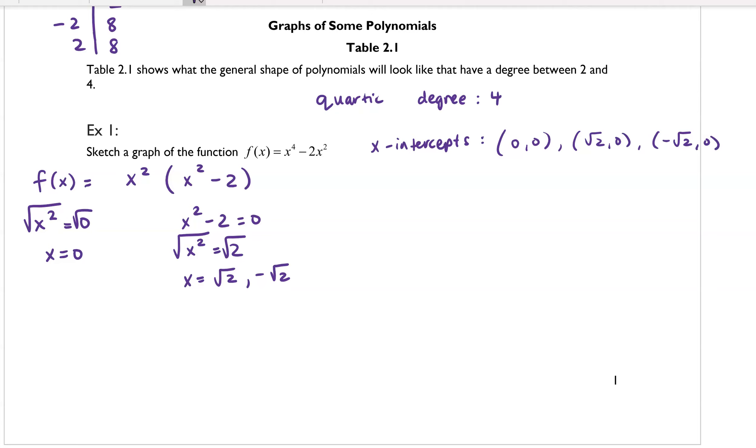So let's sketch a graph now. There's my x-axis. There's my y-axis. All right, so I've created my x-y-plane there. And then we know that we have x-intercepts at the point 0, 0 and square root of 2, 0. So square root of 2 is approximately 1.41. So I'll place that like right here. And then we also know that there's an x-intercept at negative square root of 2, 0.